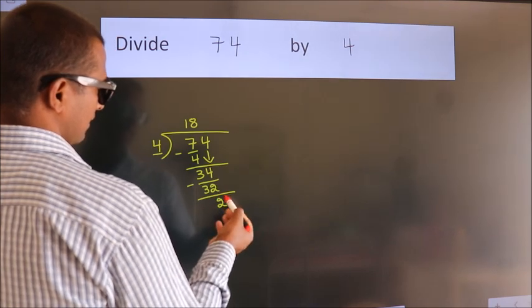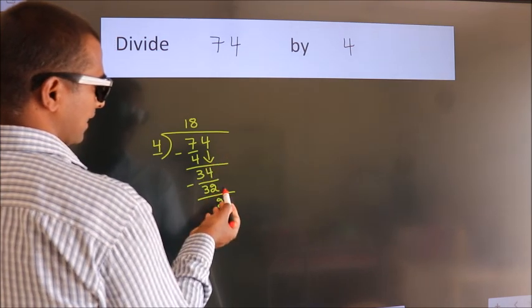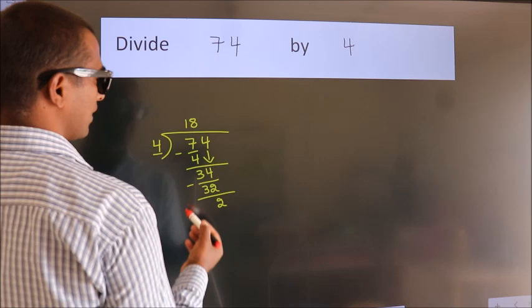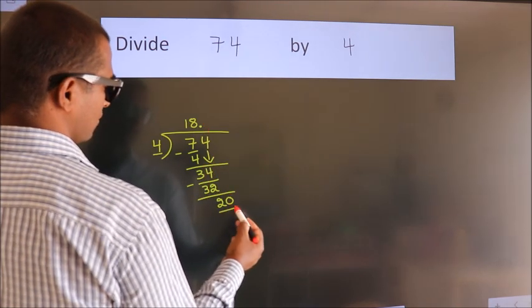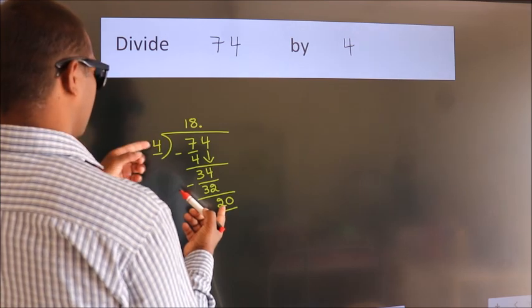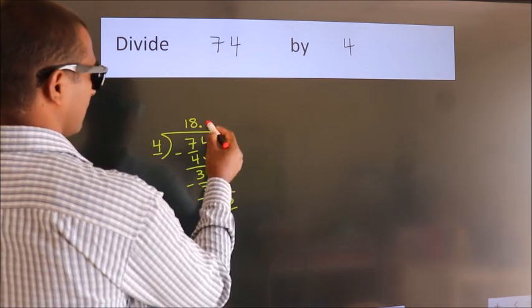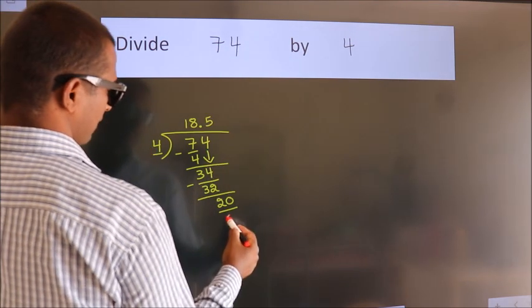After this, no more numbers to bring down. So what we do is we put a dot and take 0. So 20. When do we get 20 in the 4 table? 4 fives, 20.